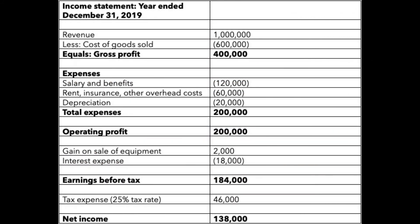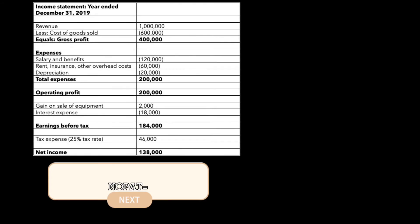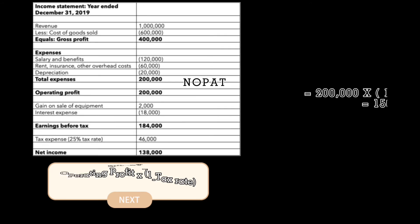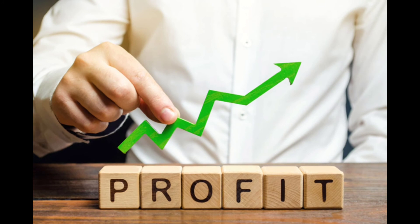Using the given statement, let's get the NOPAT. Using the given formula, let's substitute. So operating profit, 200,000, times (1 minus 25%) equals 150,000.